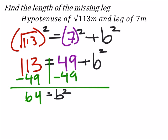64 is a great number because, as it turns out, that is a perfect square. So when I square root both sides to get rid of the square on the b, I'm left with b, and the square root of 64 is 8.